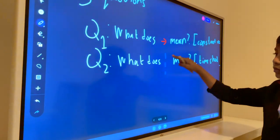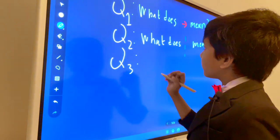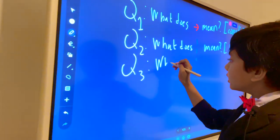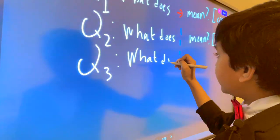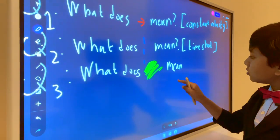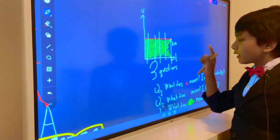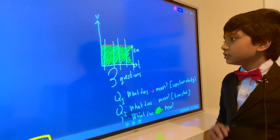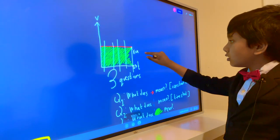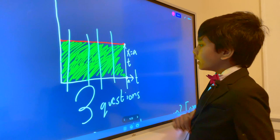And then finally, cue number three. What does the green shade mean? Let's figure it out. What does this mean? Well, we know that this blue line is just time.